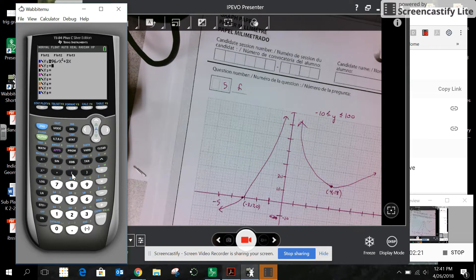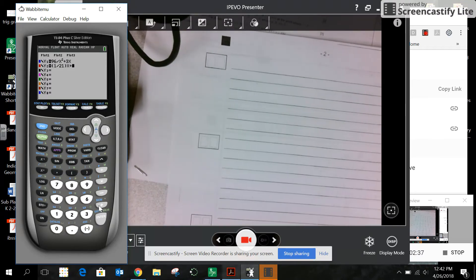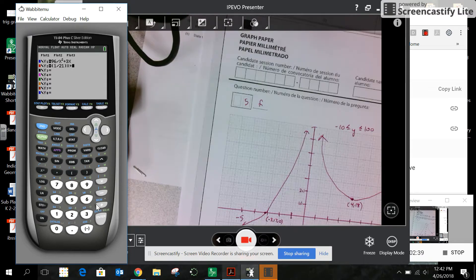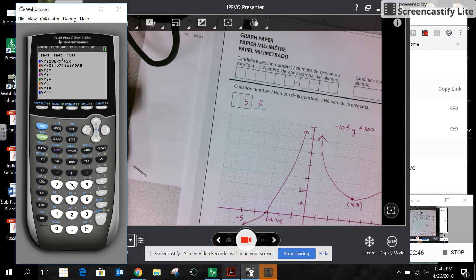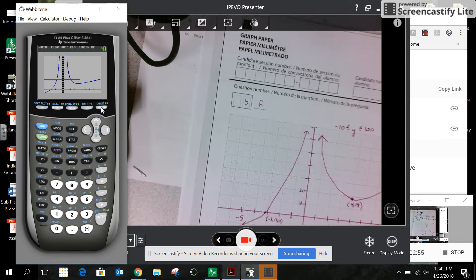I put fractions, 1/21st x plus 628 over 21. And I should get a perpendicular line at x equals 2.